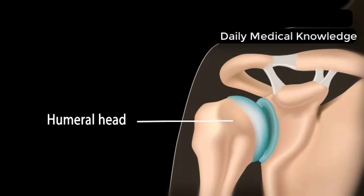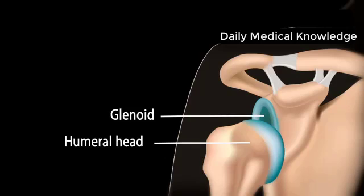Sometimes, an injury can cause the humeral head, the top of the arm bone, to come out of the glenoid, the socket.